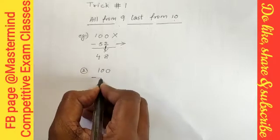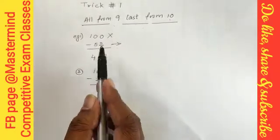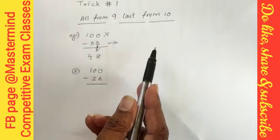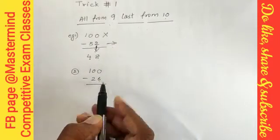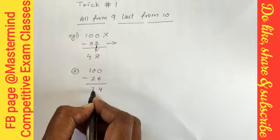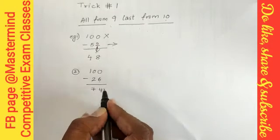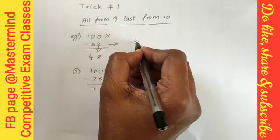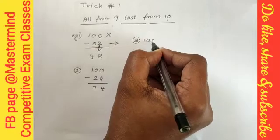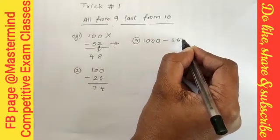Now let's try doing the same sums horizontally. Let me take one bigger number: 1000 minus 266. Again, the same concept, all from nine last from ten. 10 minus 6 is 4, 9 minus 6 is 3, 9 minus 2 is 7.